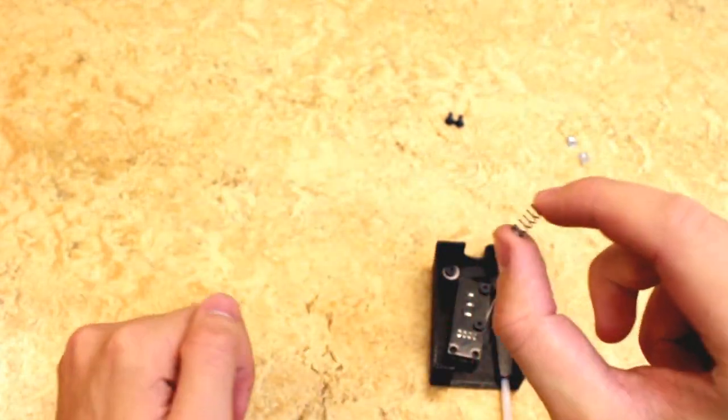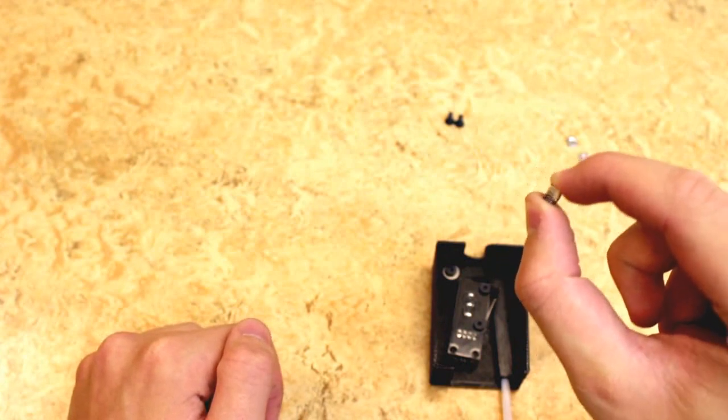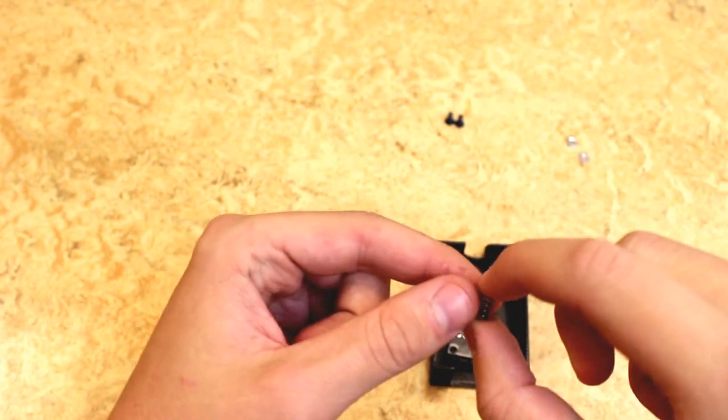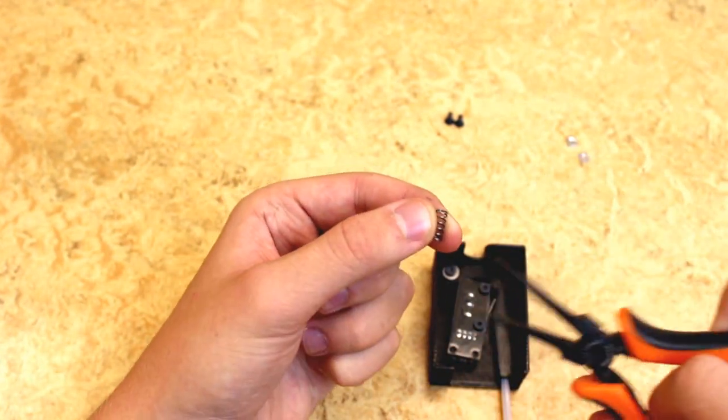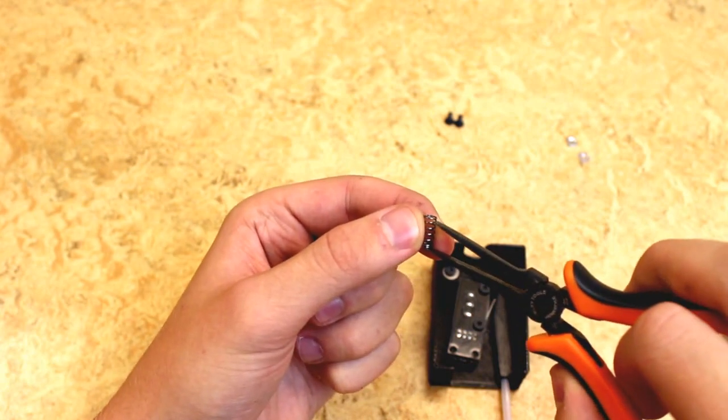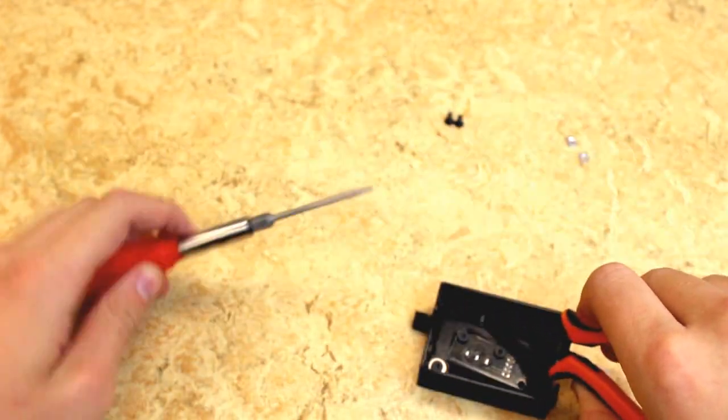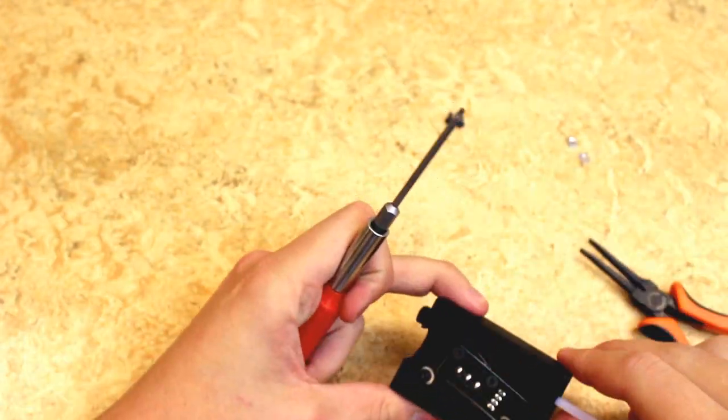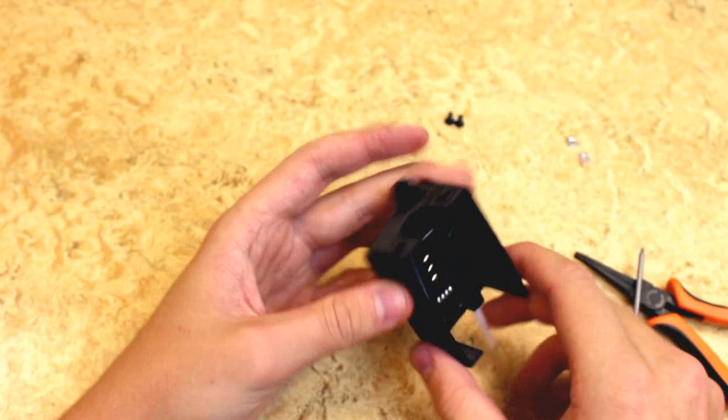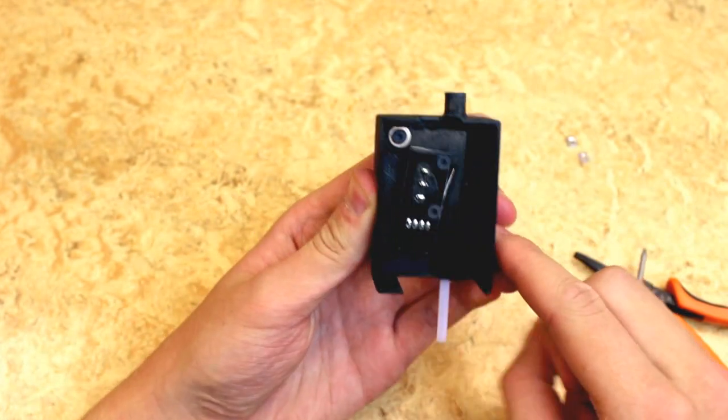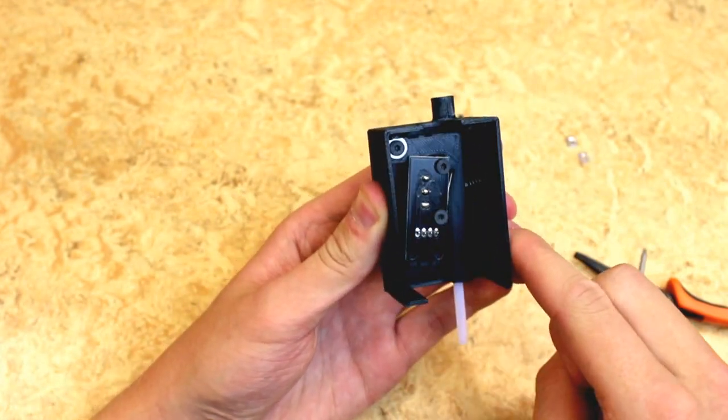Take the spring and some type of tool to squeeze it together. Now you need to place it between the arm and the case wall. On both parts there are markings where you need to place it. Make sure that you can flick the arm a bit without the spring shifting place.